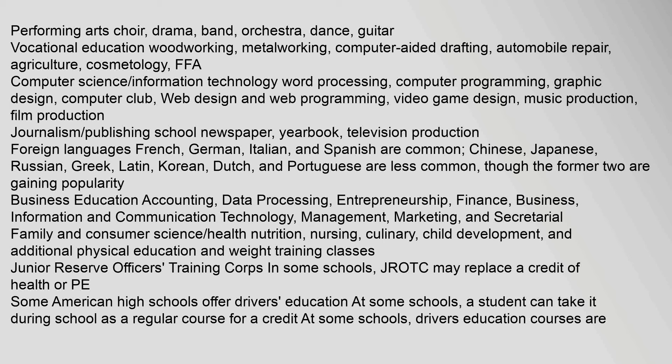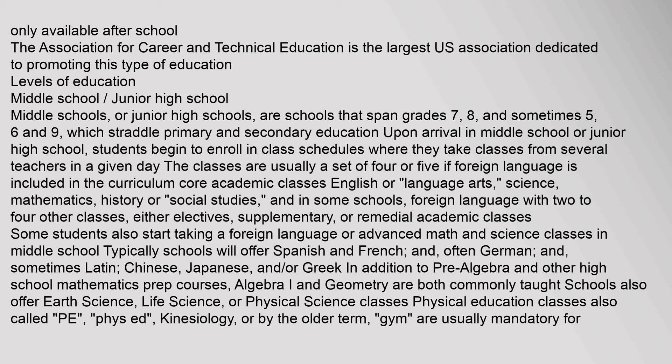Business Education includes Accounting, Data Processing, Entrepreneurship, Finance, Business, Information and Communication Technology, Management, Marketing, and Secretarial studies. Family and Consumer Science includes Health Nutrition, Nursing, Culinary, and Child Development. Additional Physical Education and Weight Training classes are also available. In some schools, JROTC may replace a credit of health or PE. Some American high schools offer driver's education, either during school for credit or only available after school. The Association for Career and Technical Education is the largest U.S. association dedicated to promoting this type of education.